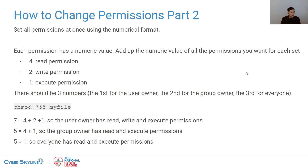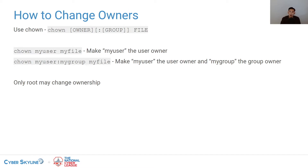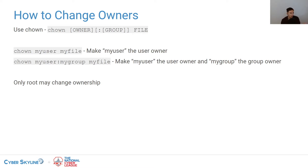Next we cover ownership of files using the chown command — C-H-O-W-N — which means change ownership. You can change just the user that owns the file with chown myuser myfile, or you can change both the user and the group with chown myuser:mygroup myfile. The group part is optional. If you want to change just the group without changing the owner, you can either specify the same owner or use the chgrp command.